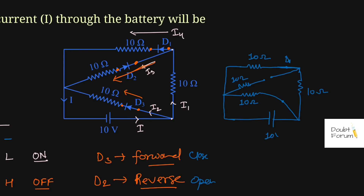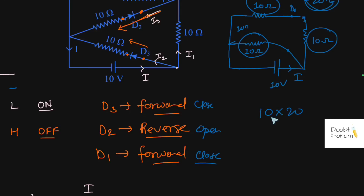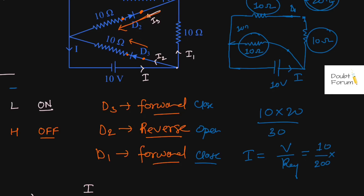This is the 10 ohm resistor and the 10 volt battery. Now to find the value of current I, we can see this 10 ohm and this 10 ohm resistor are connected in series, so their equivalent is 10 plus 10 = 20 ohm. The D2 branch is open circuit so we simply remove it. Now this 20 ohm and this 10 ohm resistor are in parallel, so the equivalent resistance is 10 multiplied by 20 divided by 10 plus 20, which equals 200 over 30. This is the equivalent resistance seen by the 10 volt battery. So the value of I equals V divided by R equivalent, which is 10 divided by 200/30. This gives 300 divided by 200, or 1.5 ampere. So the value of current flowing through this battery is 1.5 ampere.